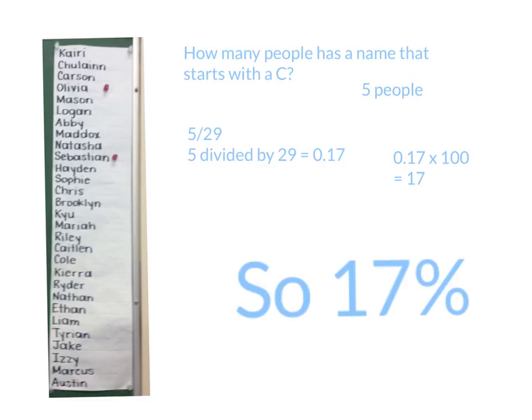So this is how many people has a name that starts with a C. Five people has it. So it's five divided by 29 equals 0.17. You have to times it by 100. 0.17 times 100 equals 17, so it's 17%.